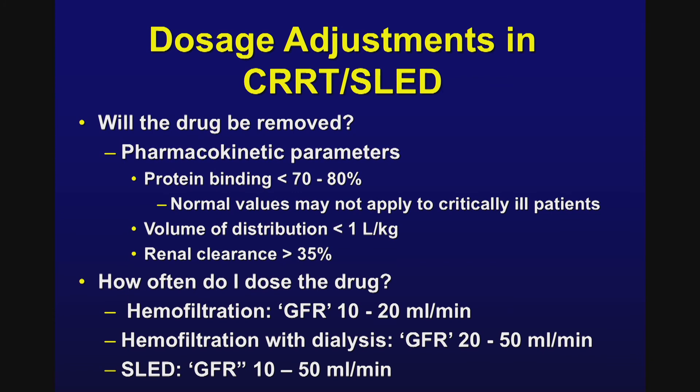To determine a priori whether a drug will be removed by CRRT or SLED, three parameters can be assessed: protein binding less than 70–80%, volume of distribution less than 1 L/kg, and renal clearance greater than 35%. Most antibiotics administered to critically ill patients fall into all three categories — protein binding less than 70%, VD less than 1 L/kg, and renal clearance greater than 35% — confirming they will be removed. Knowing the circuit type, the effective GFR ranges are: hemofiltration alone 10–30 mL/min, hemofiltration plus dialysis 20–50 mL/min, and SLED 10–50 mL/min. These can be used with package inserts or the PDR to determine appropriate starting doses.